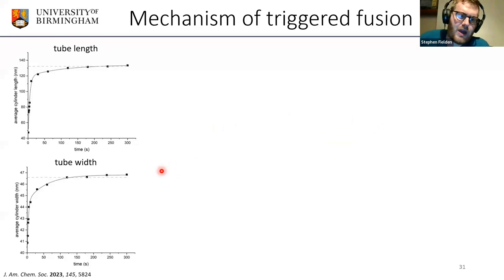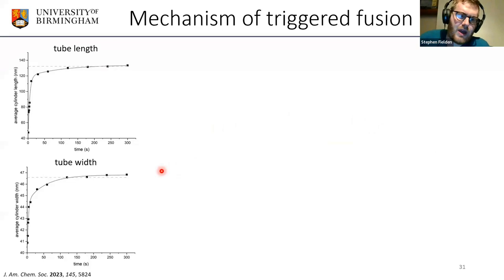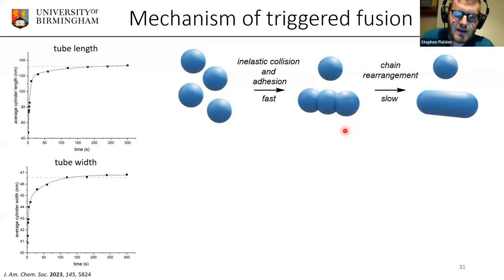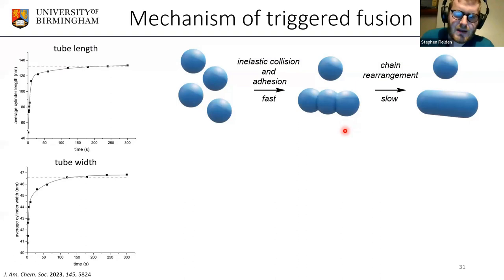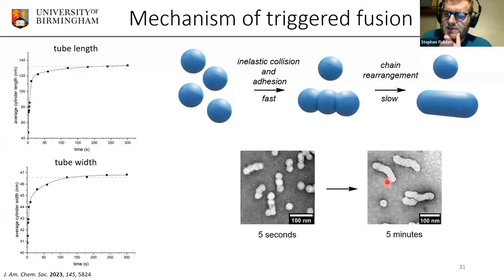From the in-situ SAXS data, we can see that tube length and tube width evolve at slightly different rates, suggesting a mechanism where spherical particles first adhere rapidly upon collision, followed by slow polymer chain rearrangement. We can isolate knobbly intermediate structures where chain rearrangement has not fully occurred, and after the process is complete, TEM images show nice smooth particles — consistent with the proposed mechanism.